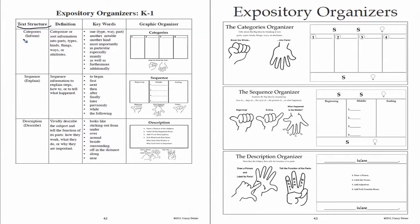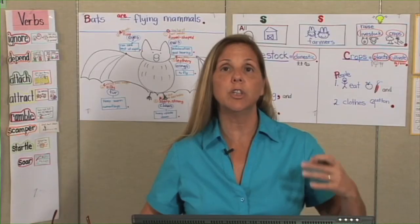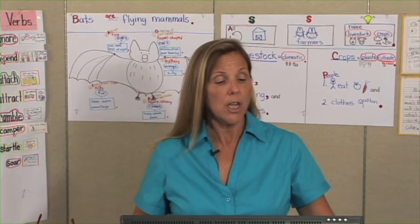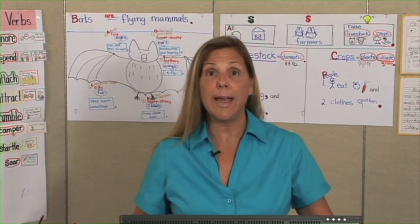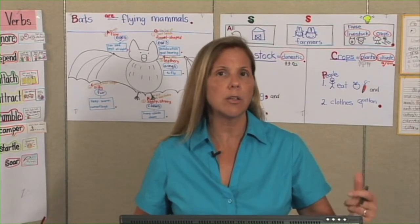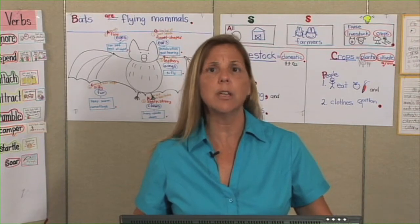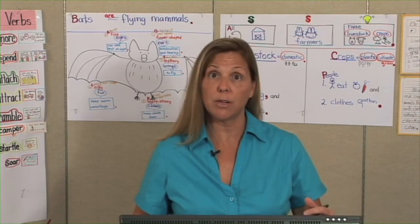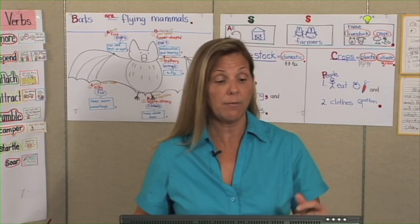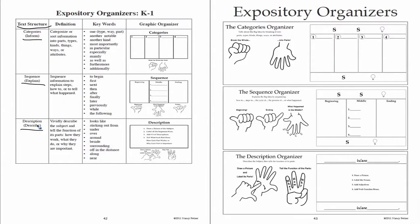Here are your different text structures: categories, sequencing, and description. It's really essential that kids start to master these text structures because these are the building blocks for later in the upper grades where they're going to have to add other text structures like cause and effect, compare-contrast, and problem-solution. So these are the building blocks to information — that's why you're primarily focusing on these three text structures.